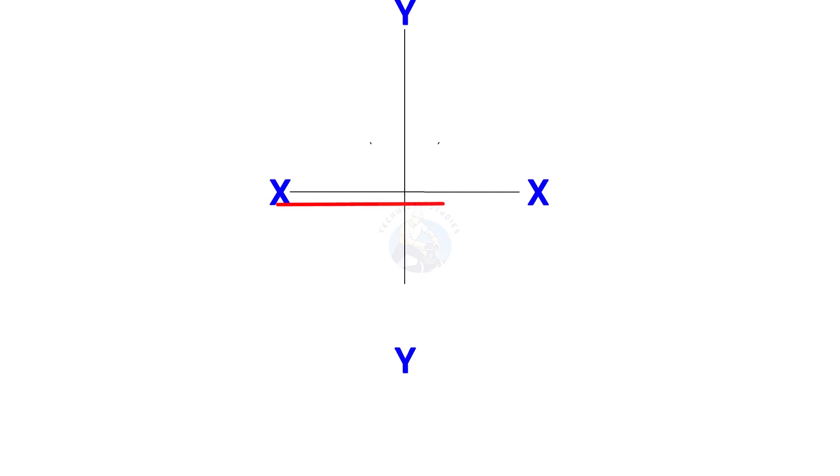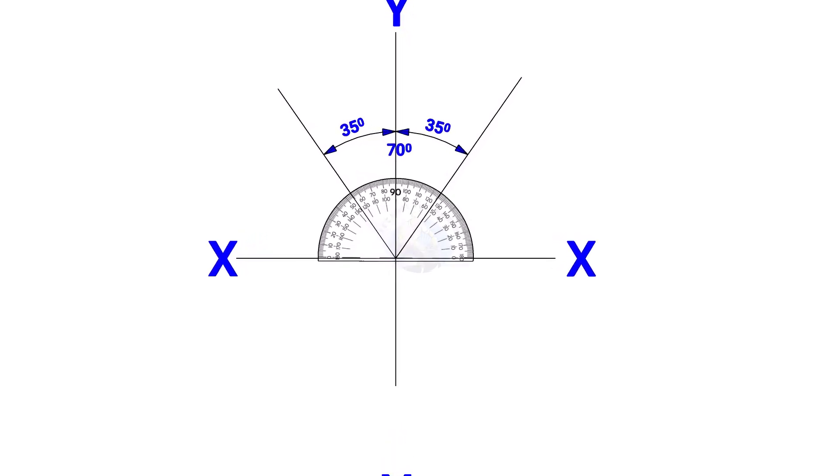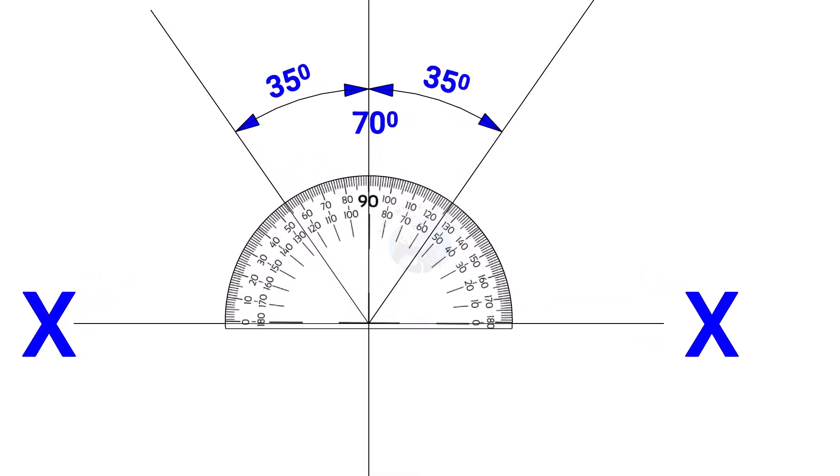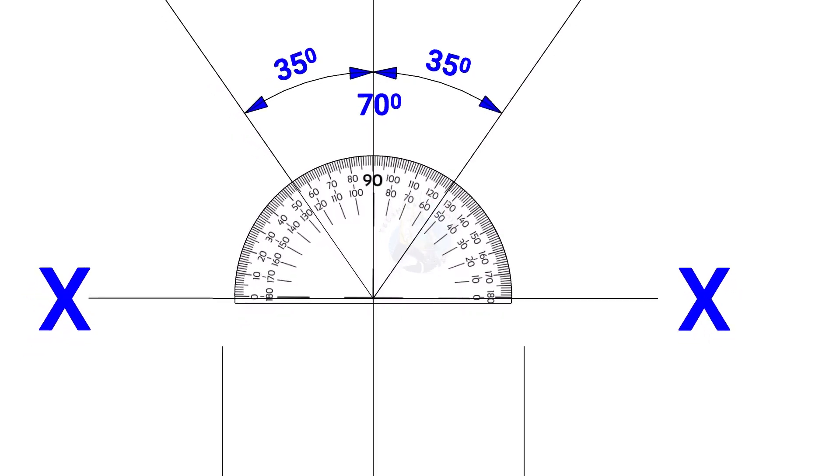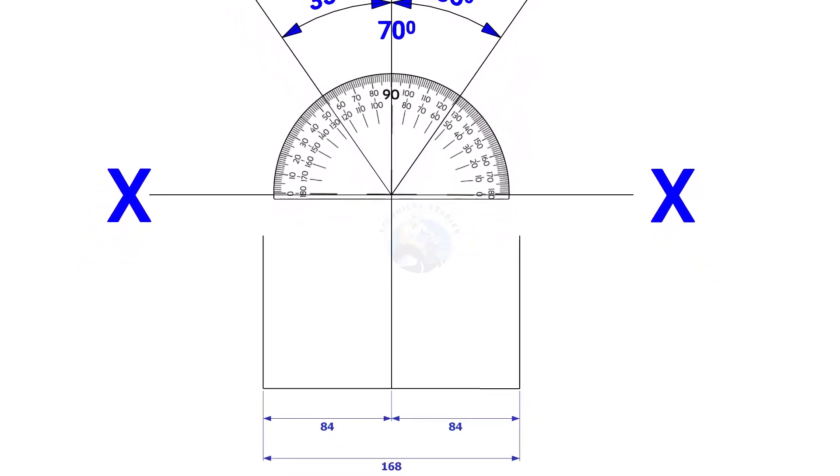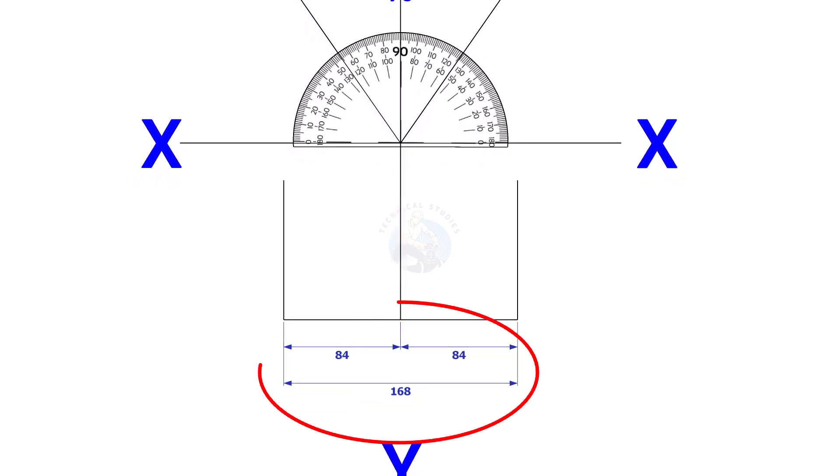Draw line XX and its perpendicular line YY. Since the including angle of the Y branch is 70 degrees, mark 35 degrees on both sides of the axis YY. Mark 84mm each on both sides of the YY axis, that is the outside diameter of the header. Draw perpendicular lines on these marks as shown.